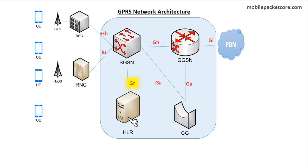The GR interface is the interface between the SGSN and an HLR. The SGSN uses the GR interface to get the subscription data of a certain user from the HLR, and to update the HLR with the location information of the user.